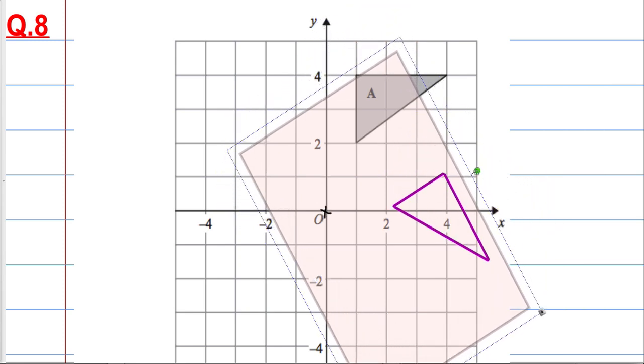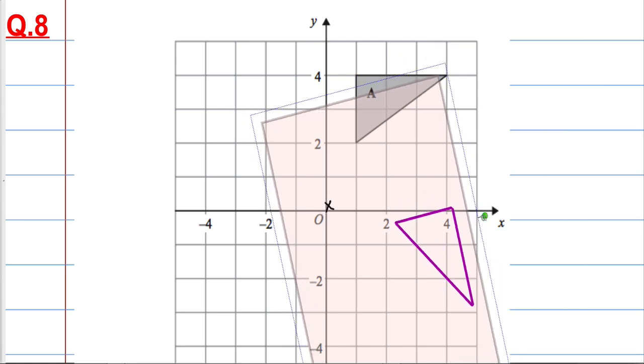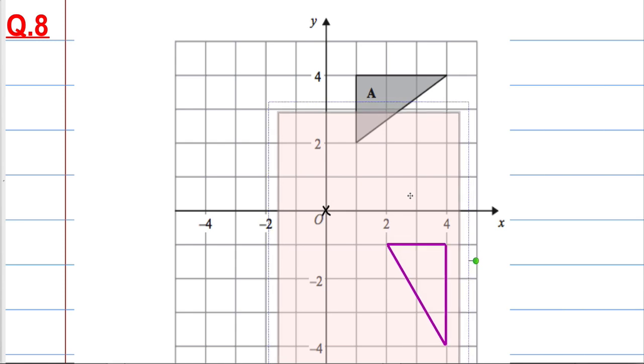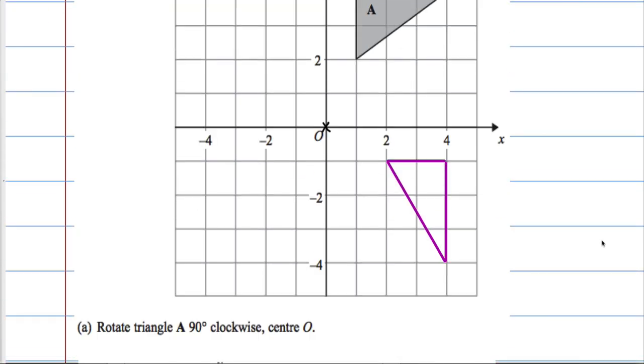Obviously your paper won't come off the mark or at least it shouldn't. We can see that the shape ends up in this position here. What you would do next is take your tracing paper away and draw the triangle back in.